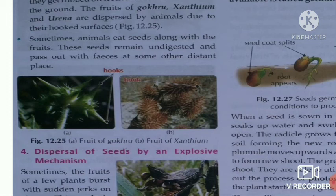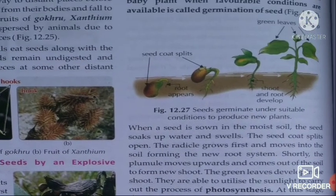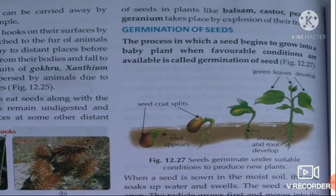Dispersal of seeds by an explosive mechanism: some plants scatter their seeds in all directions from the parent plant to further places. Dispersal of seeds in plants like balsam, castor, pea, and geranium takes place by explosion of their fruits.